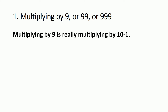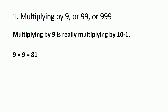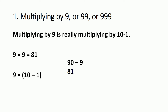For example, multiplying 9 by 10: just add a 0 to get 90. Now, 9 multiplied by 9 equals 81. Using this trick, instead of 9 write 10 minus 1. Multiply 9 by 10 to get 90, then subtract 9 multiplied by 1, which is 9. So 90 minus 9 equals 81 — exactly the same answer as 9 multiplied by 9.